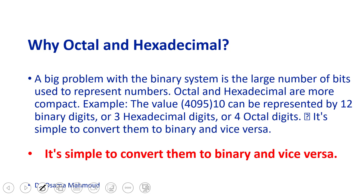Why are we not satisfied with just decimal and binary? Because if you have a large number and write it in binary, you need 12 binary digits. But in hexadecimal you only need 3 digits, and in octal you need 4. This is the advantage of hexadecimal and octal — binary takes more space. And it is simple to convert between them.